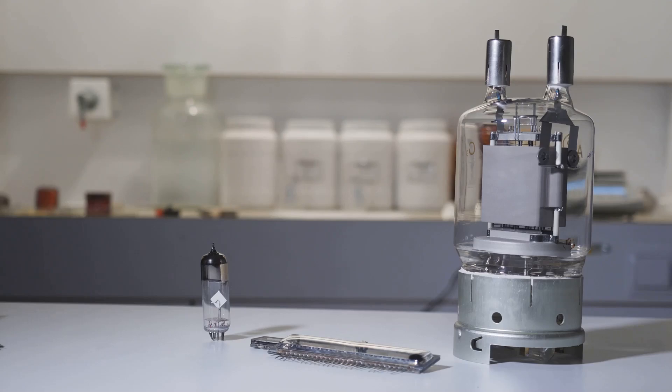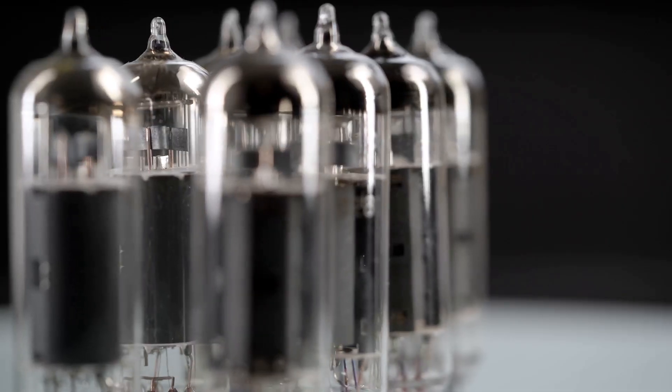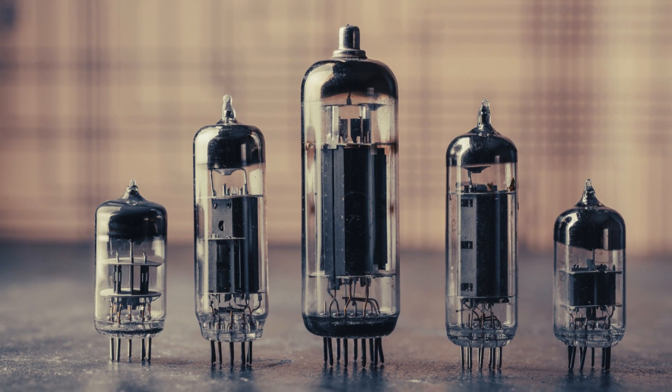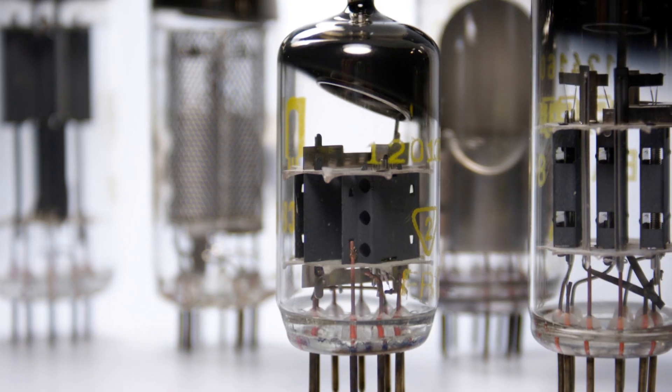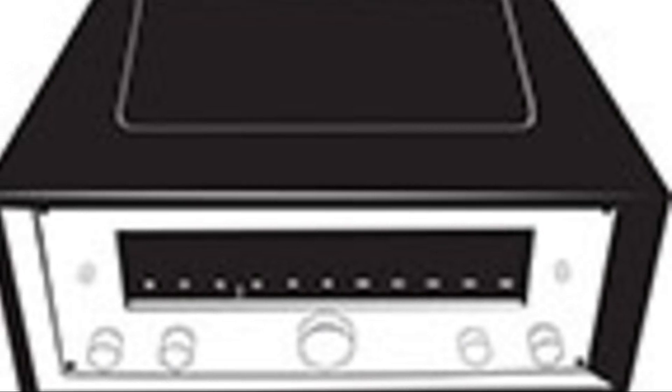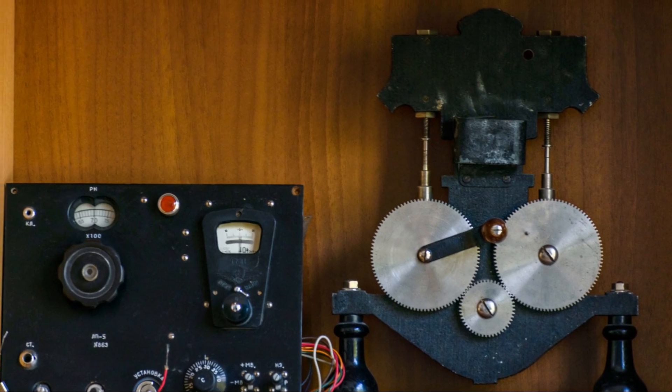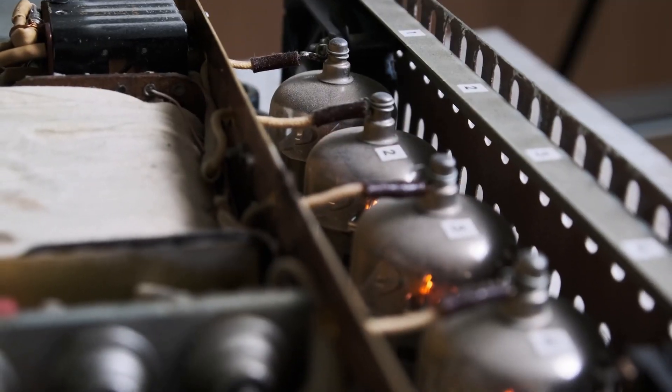Early diodes were made using vacuum tubes. These vacuum tube diodes, also known as thermionic diodes, were bulky and inefficient. However, they played a crucial role in the development of early radios and other electronic devices.